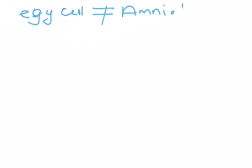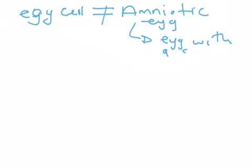An egg cell is not to be confused with another structure called the amniotic egg. The amniotic egg is basically an egg with a shell and four very important membranes.